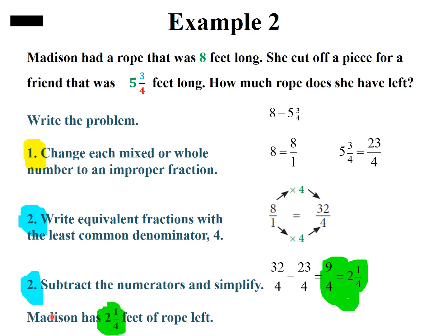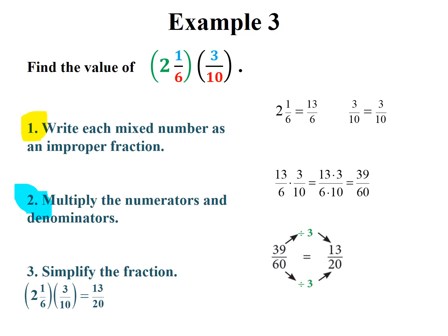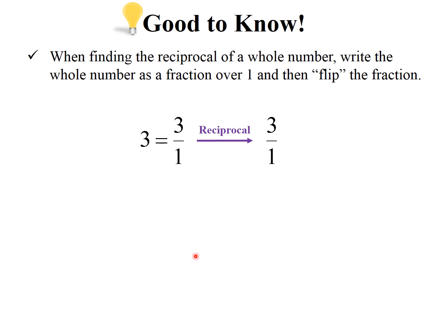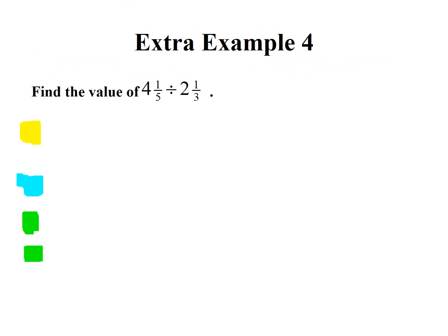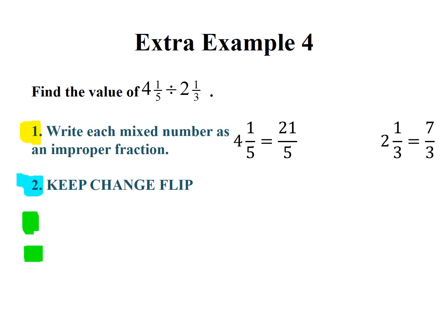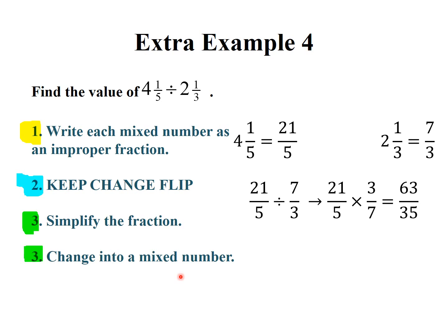Moving on to multiplication. The very first thing we're going to do is change it into an improper fraction. Change your mixed number into improper fractions. You should get 21/5 and 7/3. We don't need a common denominator, but we do need to keep the first fraction, change the operation, and flip the second fraction.